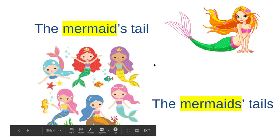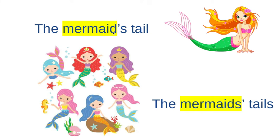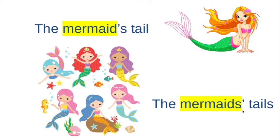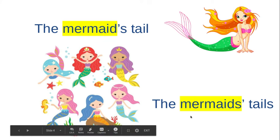In our last example, we have the mermaid's tail. There is one mermaid, so we would use an apostrophe S. If we have more than one mermaid, we have mermaids plural. So with mermaids with the S, we would put the apostrophe after the S: the mermaids' tails.